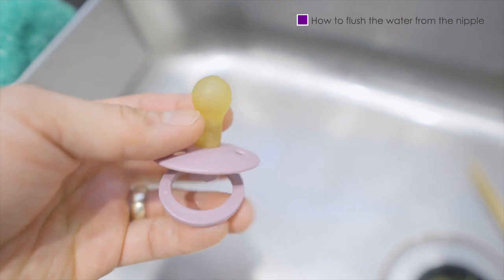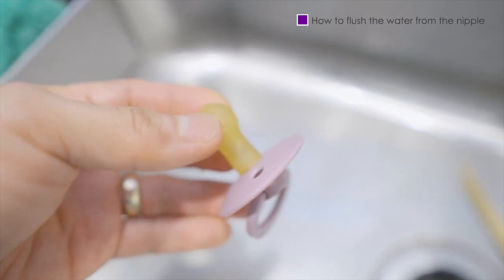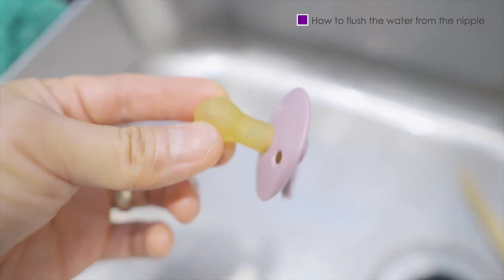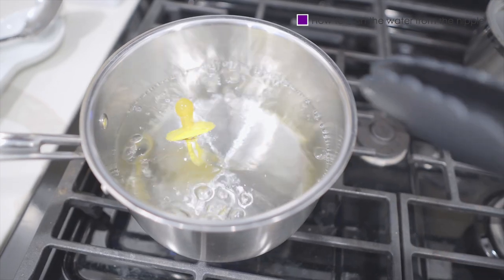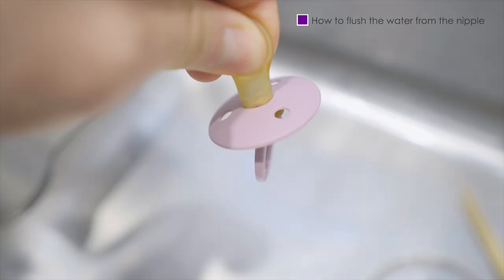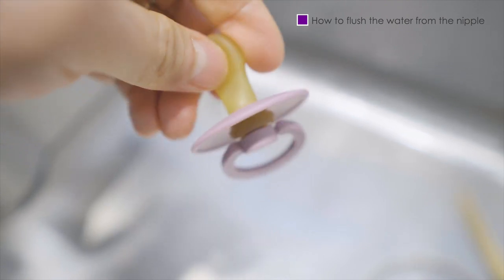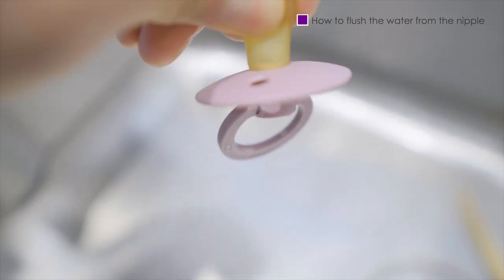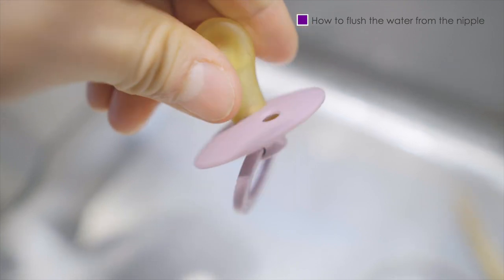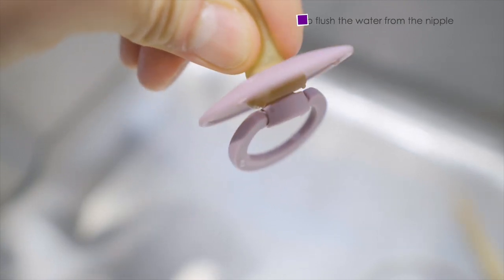If you've read Bibs pacifier reviews, yes, the Bibs tend to accumulate water in the nipple when washed and sterilized. Although I'd prefer this not to be the case, it's easy to flush. Just hold the pacifier upside down and press the nipple until all the water is flushed out. Easy peasy.